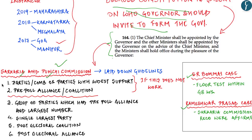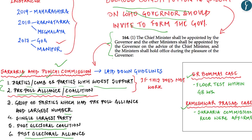Both the Sarkaria and Punchhi commissions have laid down guidelines for scenarios where no single party or coalition attains majority. They gave a sequential order to be followed by the governor: first, invite parties or combinations with the widest support; if that fails, invite a pre-poll alliance with the widest support; after failing these two, invite the group of parties with a pre-poll alliance and the largest number; followed by the single largest party in the legislature along with post-electoral alliance.